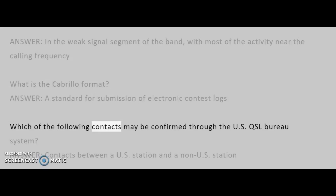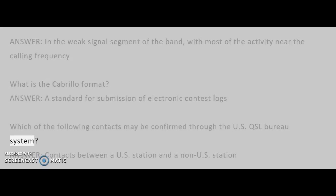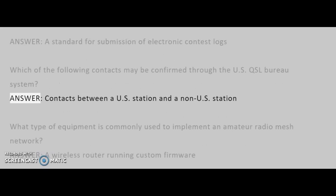Which of the following contacts may be confirmed through the U.S. QSL Bureau system? Answer: Contacts between a U.S. station and a non-U.S. station.